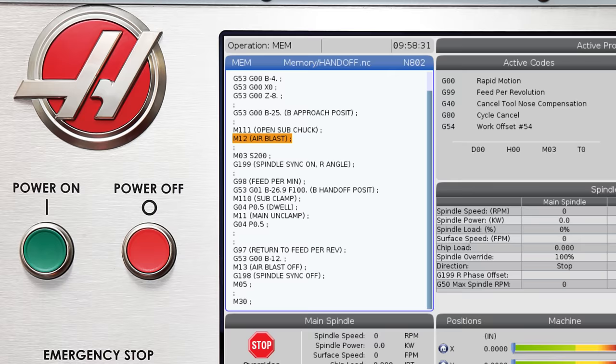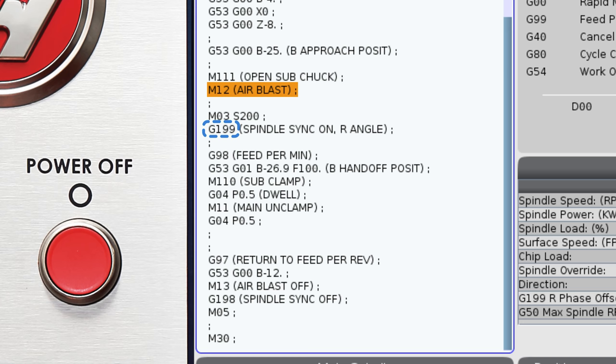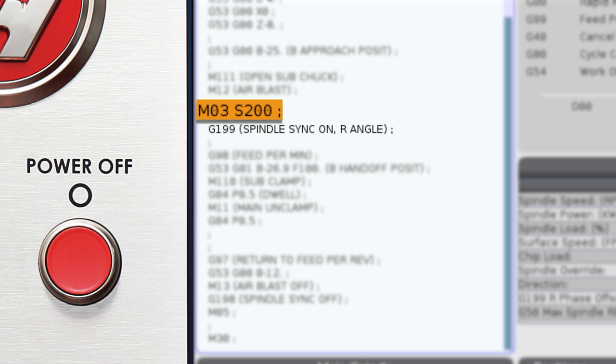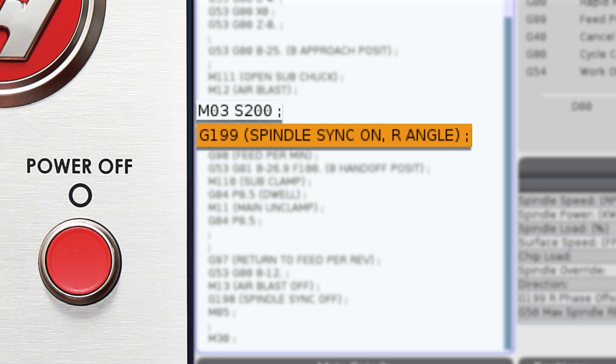So to call up our synchronization, we're gonna use a G199 command right after starting up the main spindle. So M3 S value at a reasonable RPM, followed by G199. That's gonna sync our spindles.